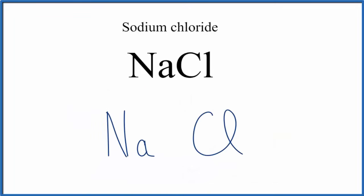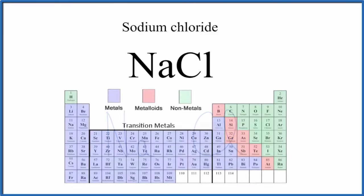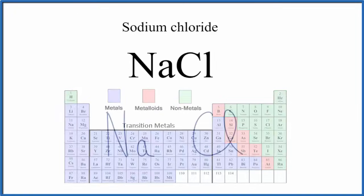Next, we need to figure out how many valence electrons each of these elements has. Sodium is in group 1 and those elements have one valence electron. Let's put that out there.